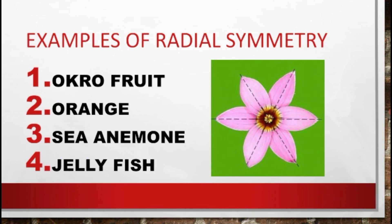Examples of radially symmetrical organisms include okra fruits, oranges, sea anemones, and jellyfish. Looking at this flower, we can divide it into many parts — not just two — each producing a mirror image. Organisms that exhibit radial symmetry have a top and bottom but neither a dorsal nor a ventral side, which we will explain as we move on.